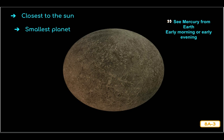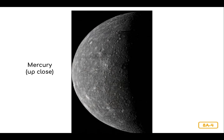Unlike Earth, Mercury does not rotate much. It spins on its axis just one and a half times during its revolution around the Sun. At first glance, you might notice that Mercury looks a lot like our moon, with its rocky, heavily cratered surface. Mercury has some of the largest known crater impacts in the solar system, meaning it has been hit by some very large rocks. In fact, some craters are about 50 miles wide.